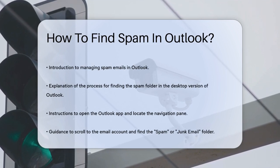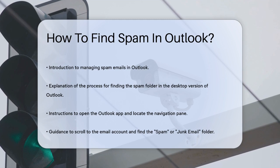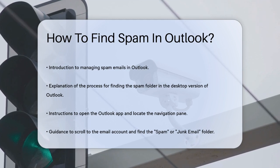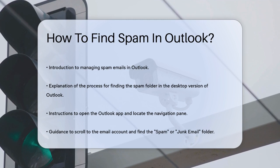First, let's start with the desktop version of Outlook. To find your spam folder, open the Outlook app on your computer. On the left side, you'll see the Navigation pane. Here, scroll down to the email account you're using and look for a folder labeled Spam or Junk Email. Click on this folder and you'll see all the emails that Outlook has automatically marked as spam.